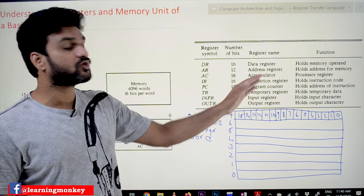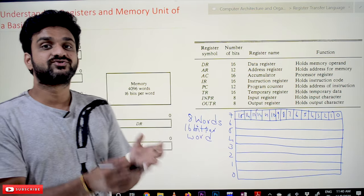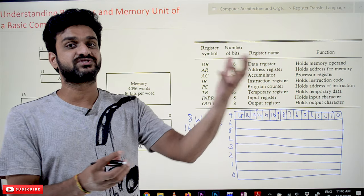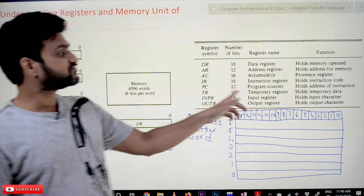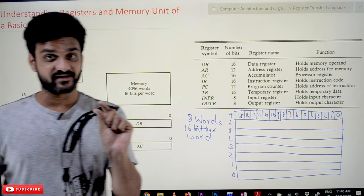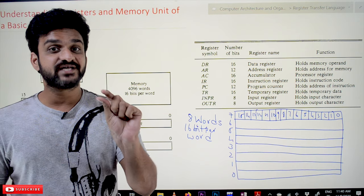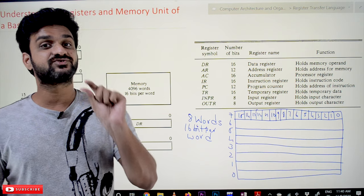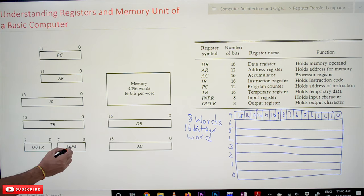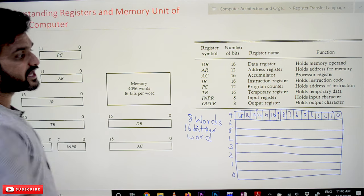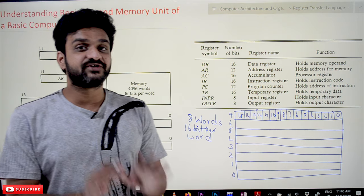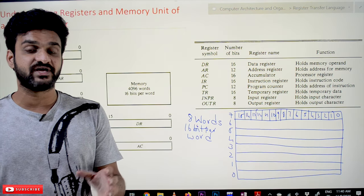Temporary register holds temporary data. Whenever we need temporary data to be stored somewhere, it will get stored in the temporary register. Input register holds input characters. The characters are of size 8 bits, so the input characters will get stored in the input register. Similarly, the output character will get stored in the output register. These are the different types of registers available.